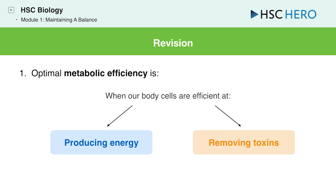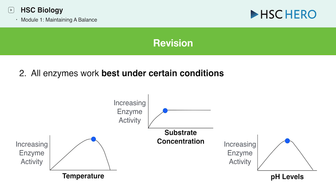1. Optimal metabolic efficiency is when our bodies are efficiently producing energy for the body and removing toxins from the body. 2. All enzymes work best under certain conditions. A. For temperature and pH levels, the optimal enzyme activity point is reached at a specific temperature point or pH level. B. For substrate concentration, once the saturation point is reached, enzyme activity won't increase any further.